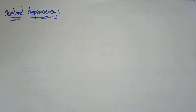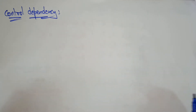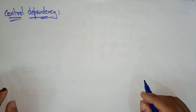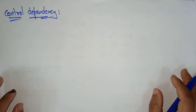Hi students, welcome back. Let's continue with the conditions of the parallelism. In the previous video, I explained one type of dependency parallelism, that is data dependency, with examples. Now let's come into the second type of dependency of parallelism, that is control dependency.